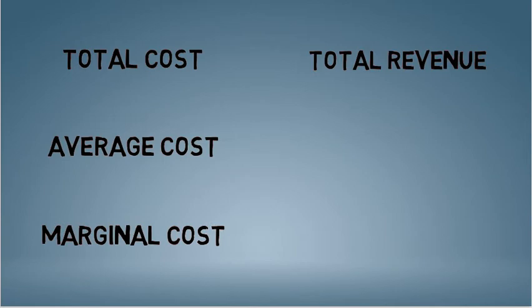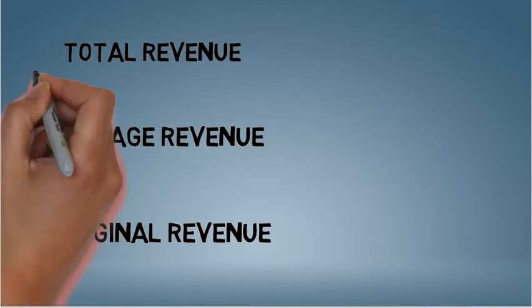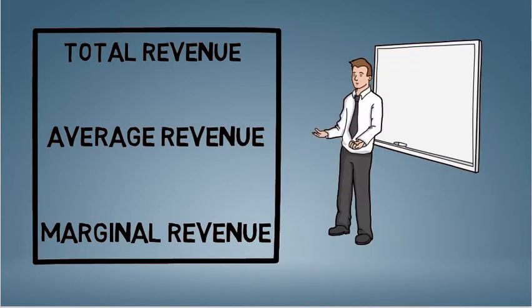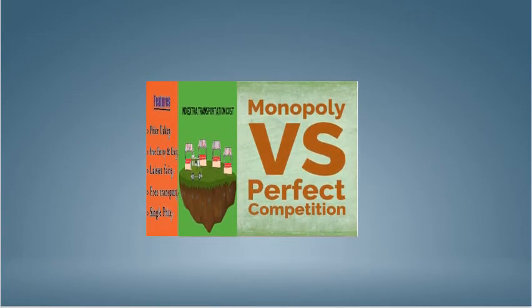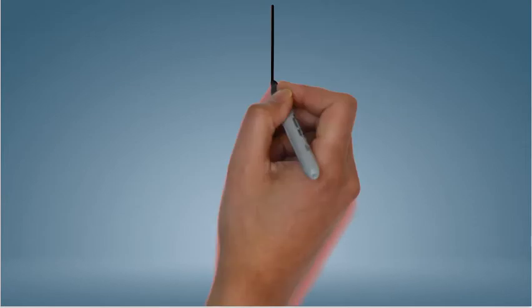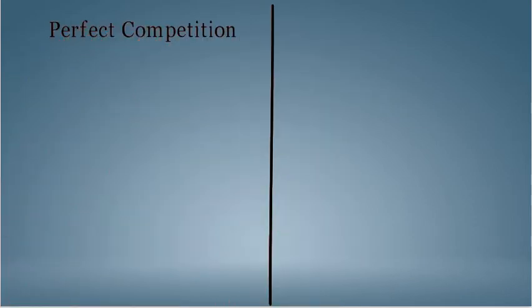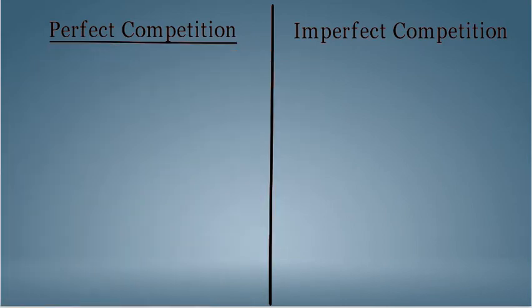Now, let us see different revenue curves. There are three types of revenue curves: Total revenue, Average Revenue and Marginal Revenue. However, these curves look different in perfect competition and different in imperfect competition. You can see my previous video on monopoly versus perfect competition to understand these market structures. For now, let us see how these revenue curves will look like in perfect competition.